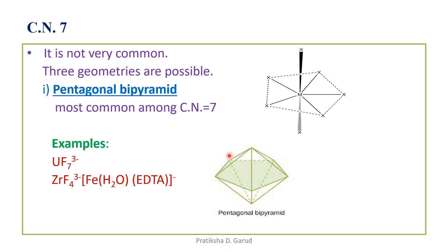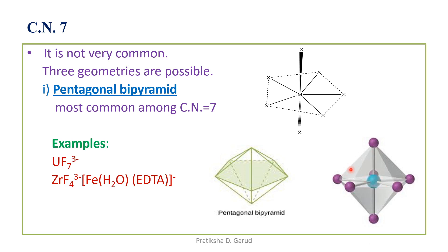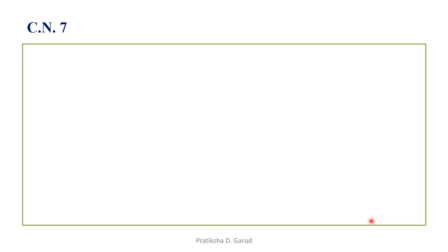It is called pentagonal bipyramidal because at the center we have a pentagon with one ligand oriented above and one below — two axial positions — so all five equatorial ligands are in one plane with the remaining two axial ligands above and below.